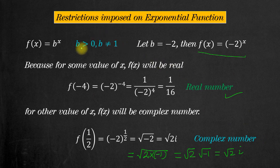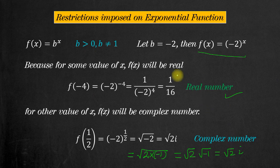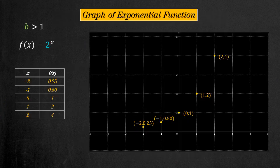So the restrictions are clear: if b is less than zero, sometimes the function gives a real number and sometimes a complex number. If b equals one, it becomes a constant function. If b equals zero, it also becomes a constant function. Therefore we do not allow these values.